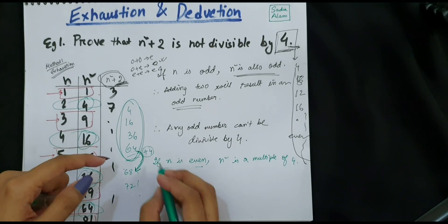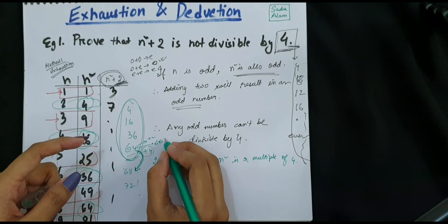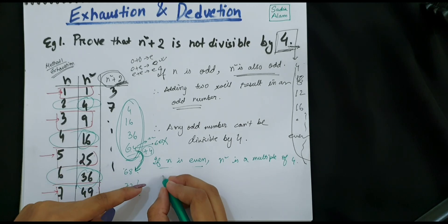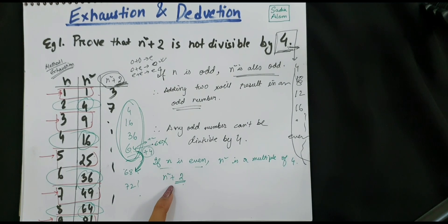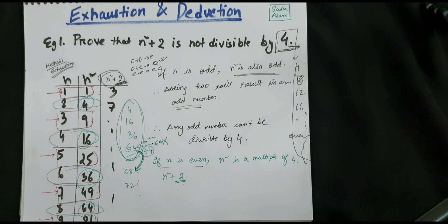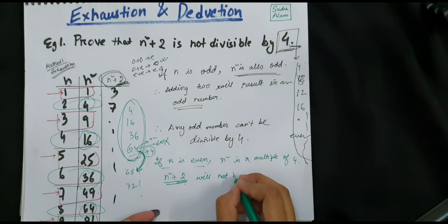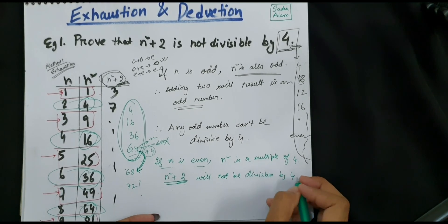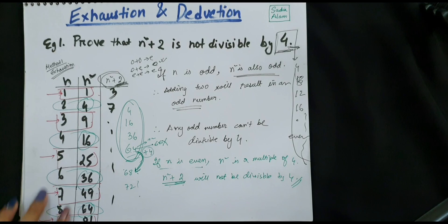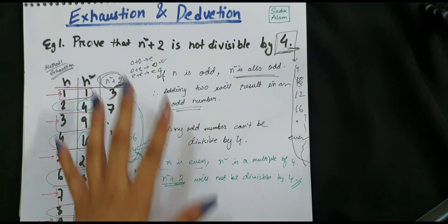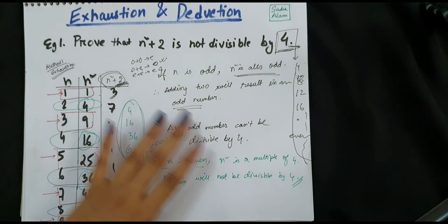Any number divisible by 4 will be at a difference of 4 from the previous one — for example, 68, 72. If we add less than 4, for example if we add 2, the result, say 66, is not divisible by 4. Since we are adding n squared plus 2, adding 2 will not result in a number divisible by 4. So by taking different numerical values of n we can prove that n squared plus 2 is not divisible by 4. For exhaustion, always take values of n from 1 to 9 if nothing is mentioned.